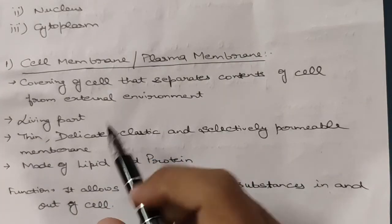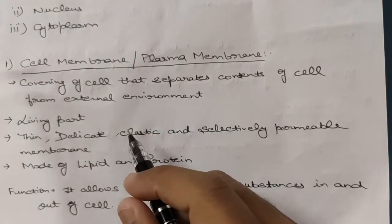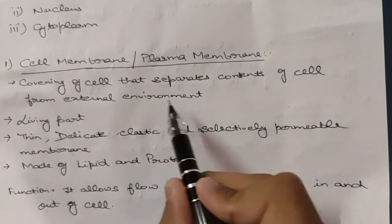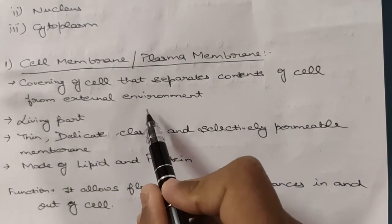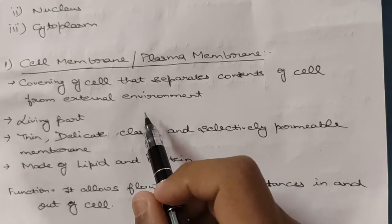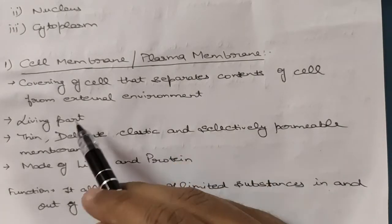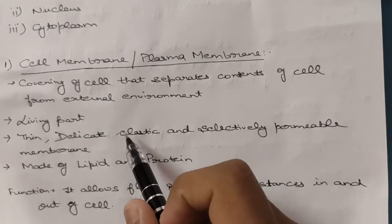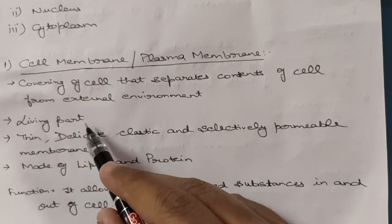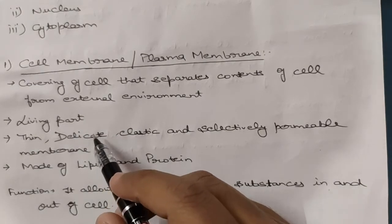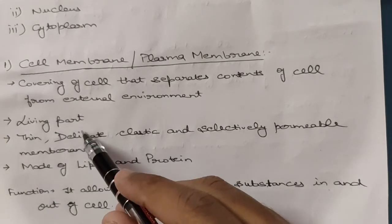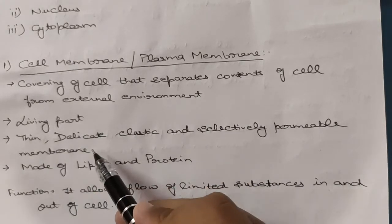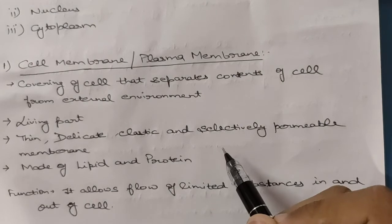The first component is the cell membrane, also known as the plasma membrane. It is a covering of the cell that separates the contents of the cell — cytoplasm, nucleus, and other cell organelles — from the external environment. Importantly, it is a living part. When we discuss the cell wall, we will note that it is a non-living part, so remember that cell membrane is living.